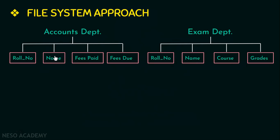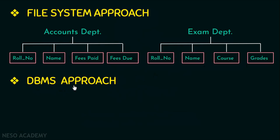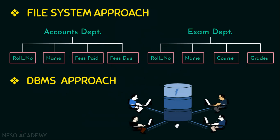As we can see here, the student details such as the student roll number and student name are being repeated in both files. This leads to redundancy or duplication of data as well as wastage of storage space. Whereas in the DBMS approach, the entire data is stored in a single repository and multiple users can access the data based on their interests.